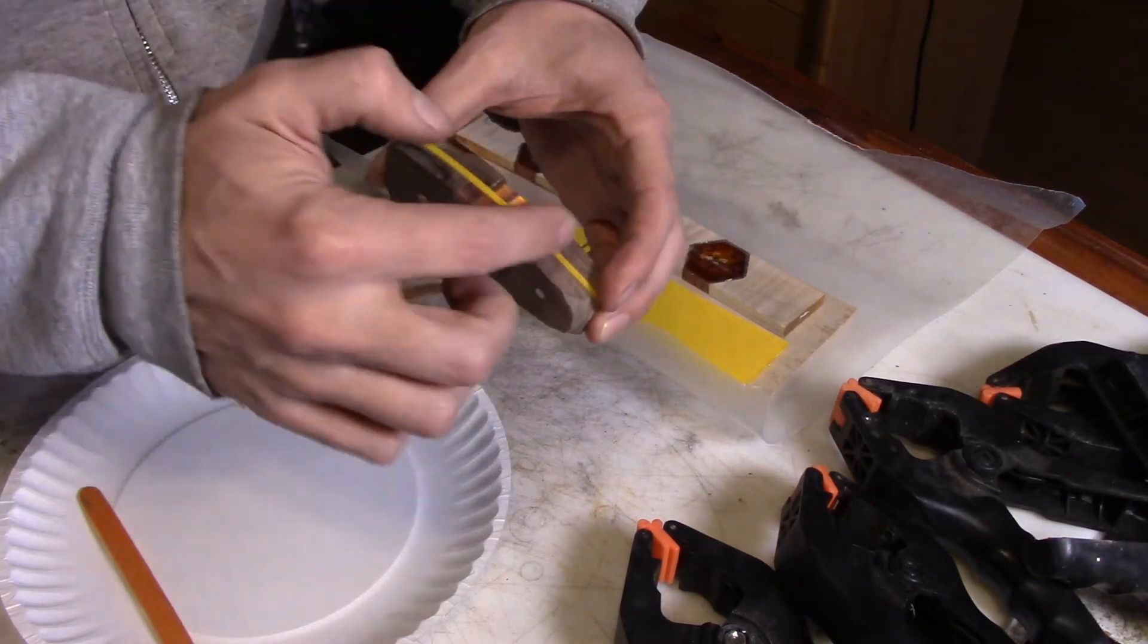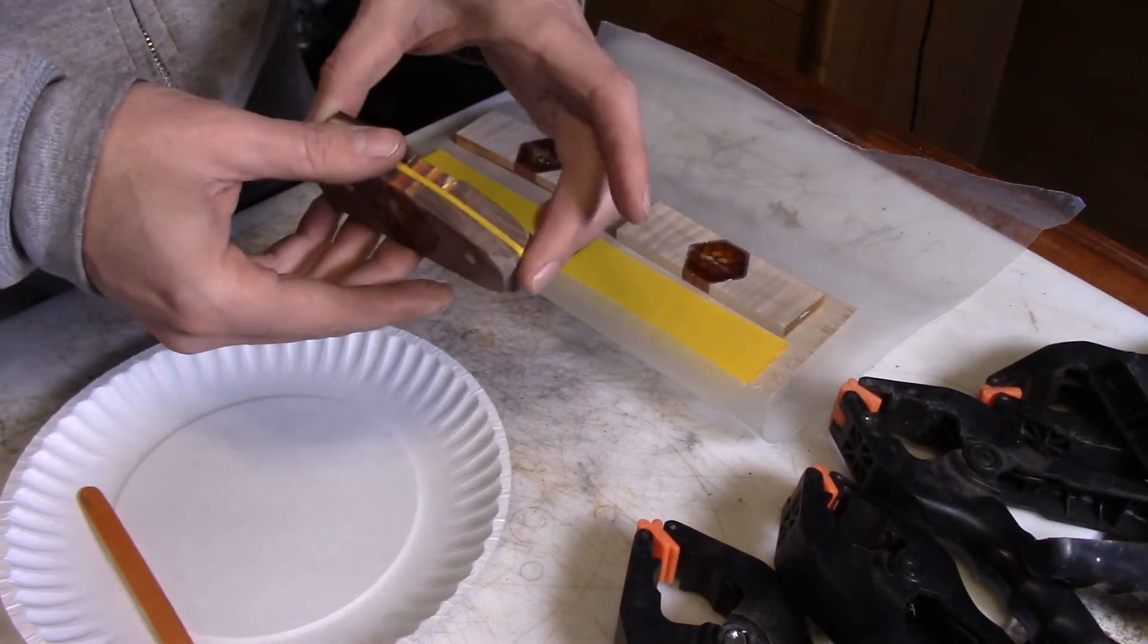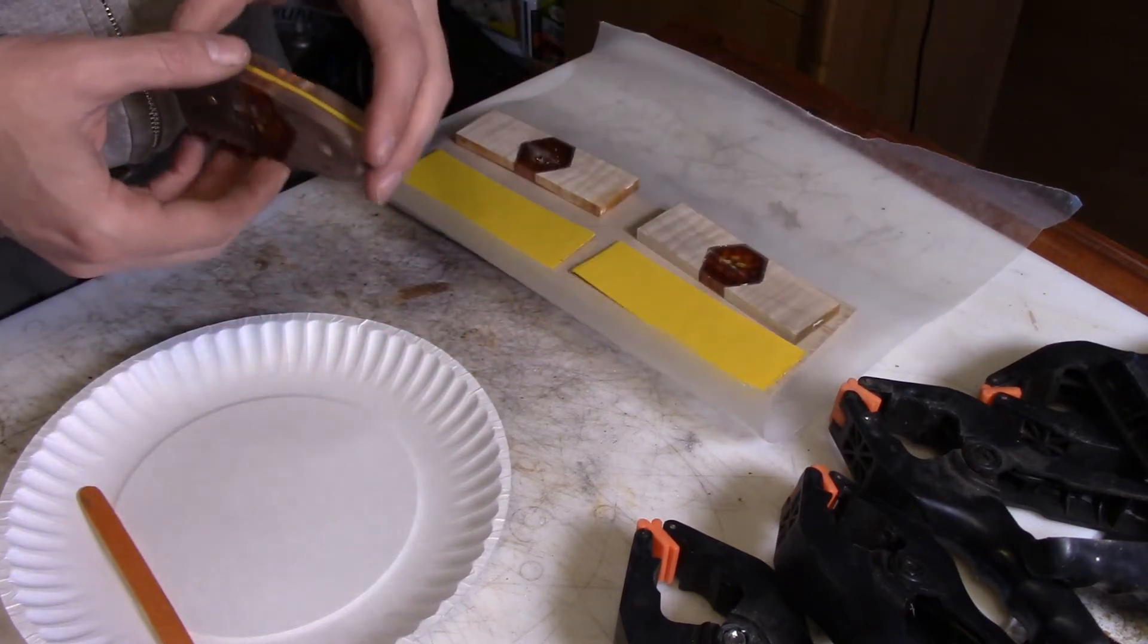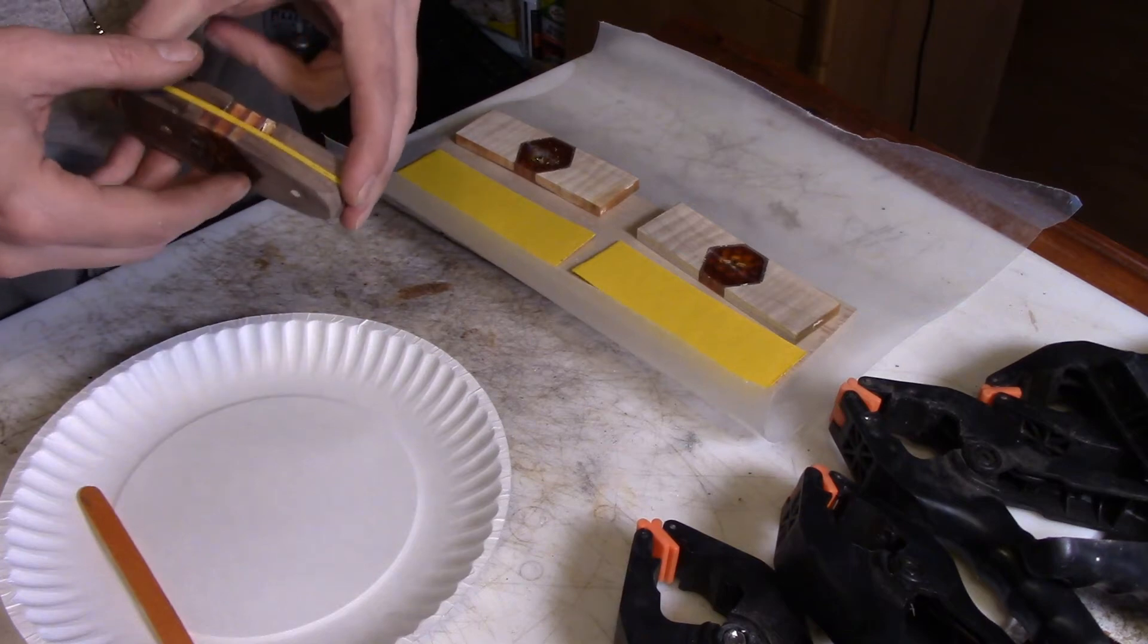So this one is set further back than that one. So I'm going to go to plan B which is the curly maple scales and I'm going to go ahead and glue those up and hopefully not do the same thing to them.